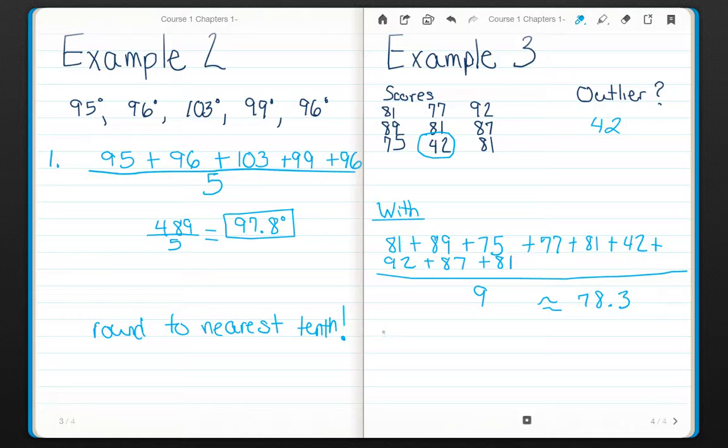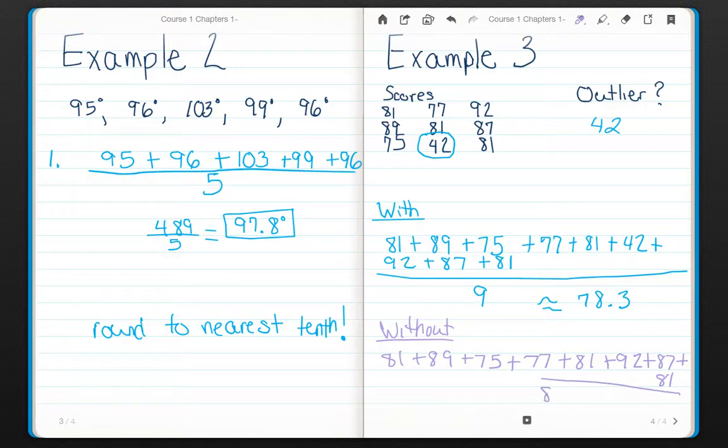However, if I add them up without my outlier, this time I have 81 plus 89 plus 75 plus 77 plus 81. Not plus 42. I'm going to skip it. Plus 92 plus 87 plus 81. All divided by 8. Now I only have 8 data scores.